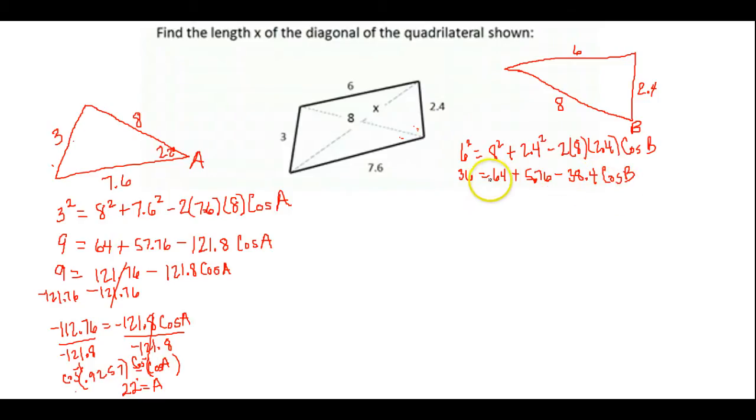So here we have 36 equals 8 squared is 64, plus 2.4 squared is 5.76, minus 2 times 8 times 2.4 was 38.4, times the cosine of B. Again, I'm going to add these two values together on my journey to solve for B. I added those two together. I get 69.76. I'm going to subtract that from both sides. Again, my goal is to get the cosine of B all alone.